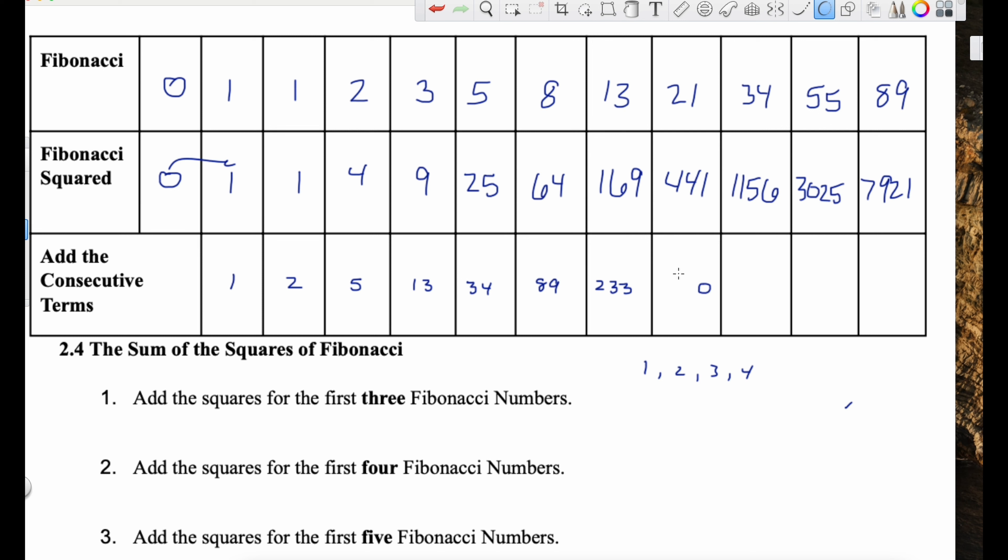So, I mean, we're, this is the Fibonacci sequence right here for the factors. Starting with two. Two, three, five, eight. And then this one also is a Fibonacci sequence starting with one.